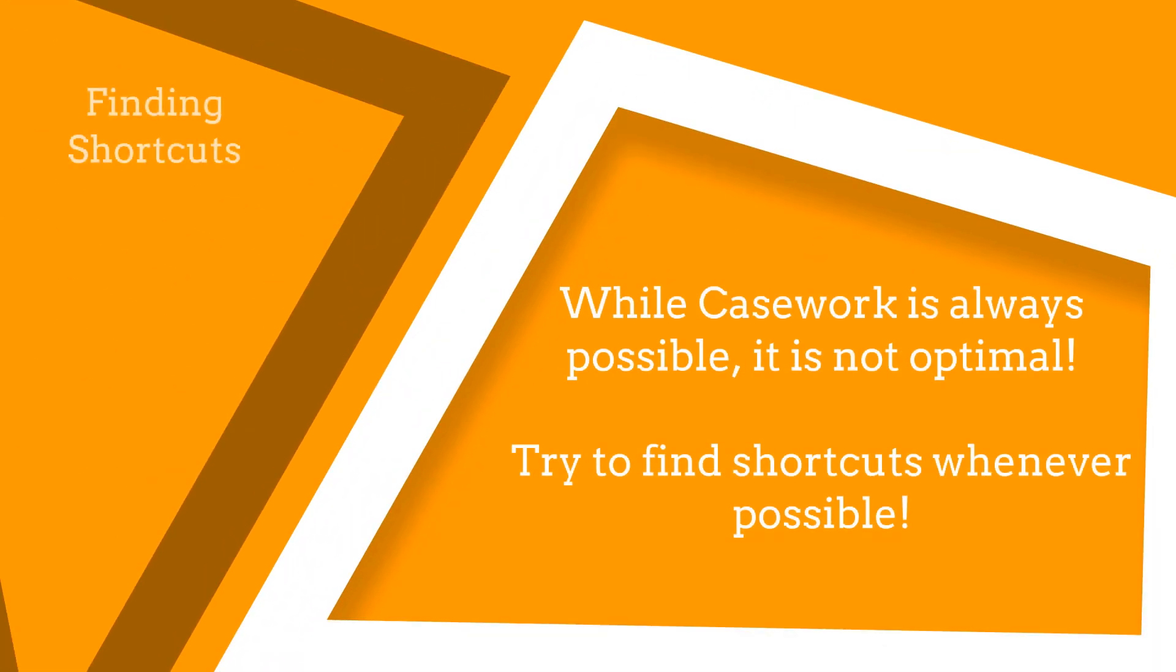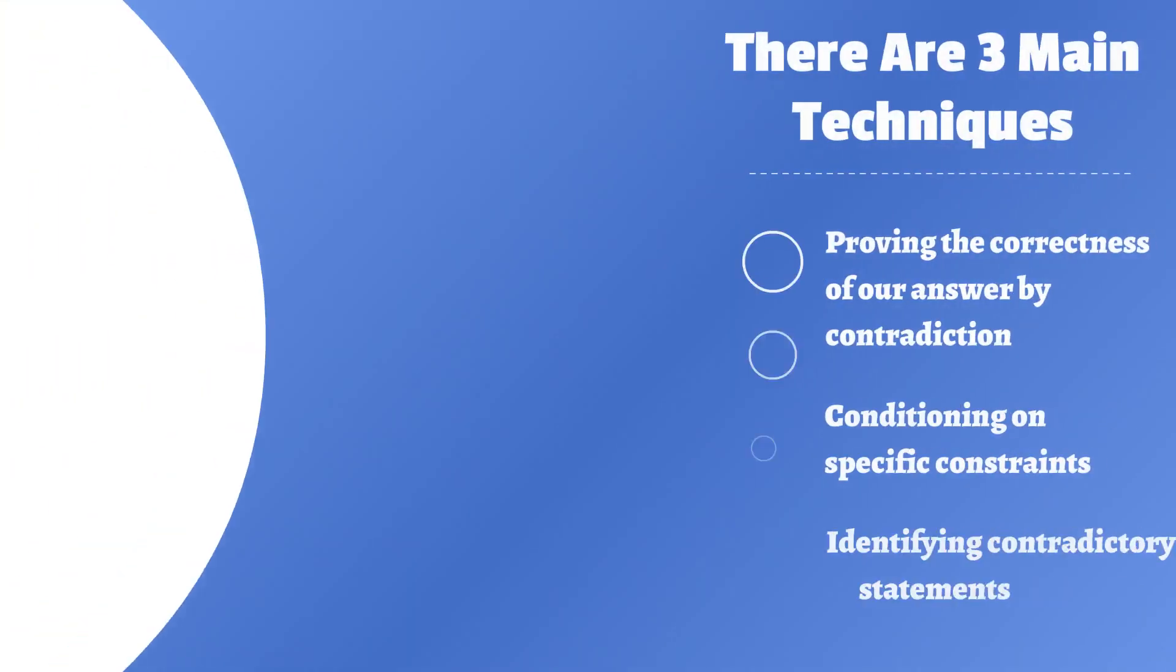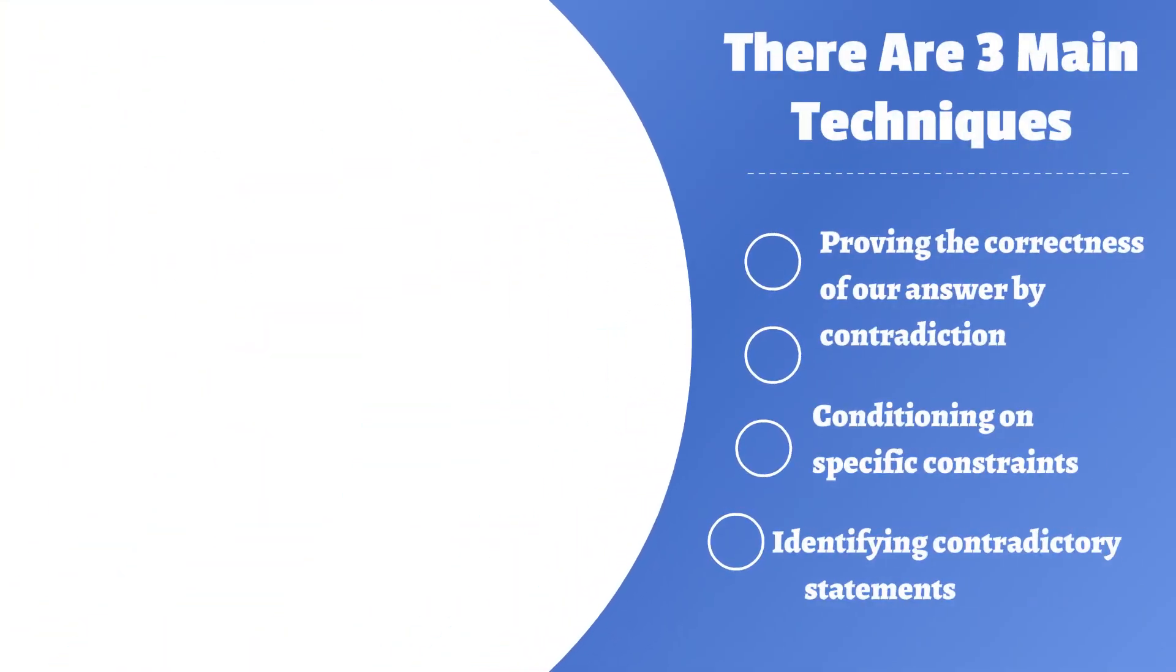Method number two, conditioning on specific constraints. There are three main techniques to consider when you're trying to find shortcuts. We can prove the correctness of our answer by contradiction, condition on specific constraints, or identify contradictory statements.